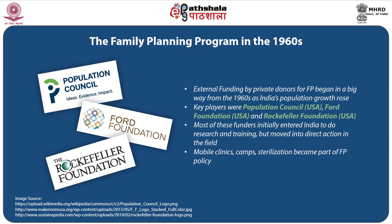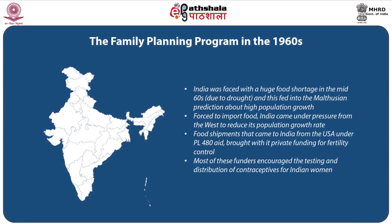External funding by private donors for family planning began in a big way from the 1960s as India's population growth rose. Key players were the Population Council, the Ford Foundation, and the Rockefeller Foundation, all from the United States of America. There were mobile clinics, camps, and sterilization became part of the family planning policy. Most of these funders initially entered India to do research and training but moved into direct action in the field. The family planning program in the 1960s was faced with a huge food shortage due to droughts, feeding into the Malthusian prediction about high population growth and forcing India to import food.